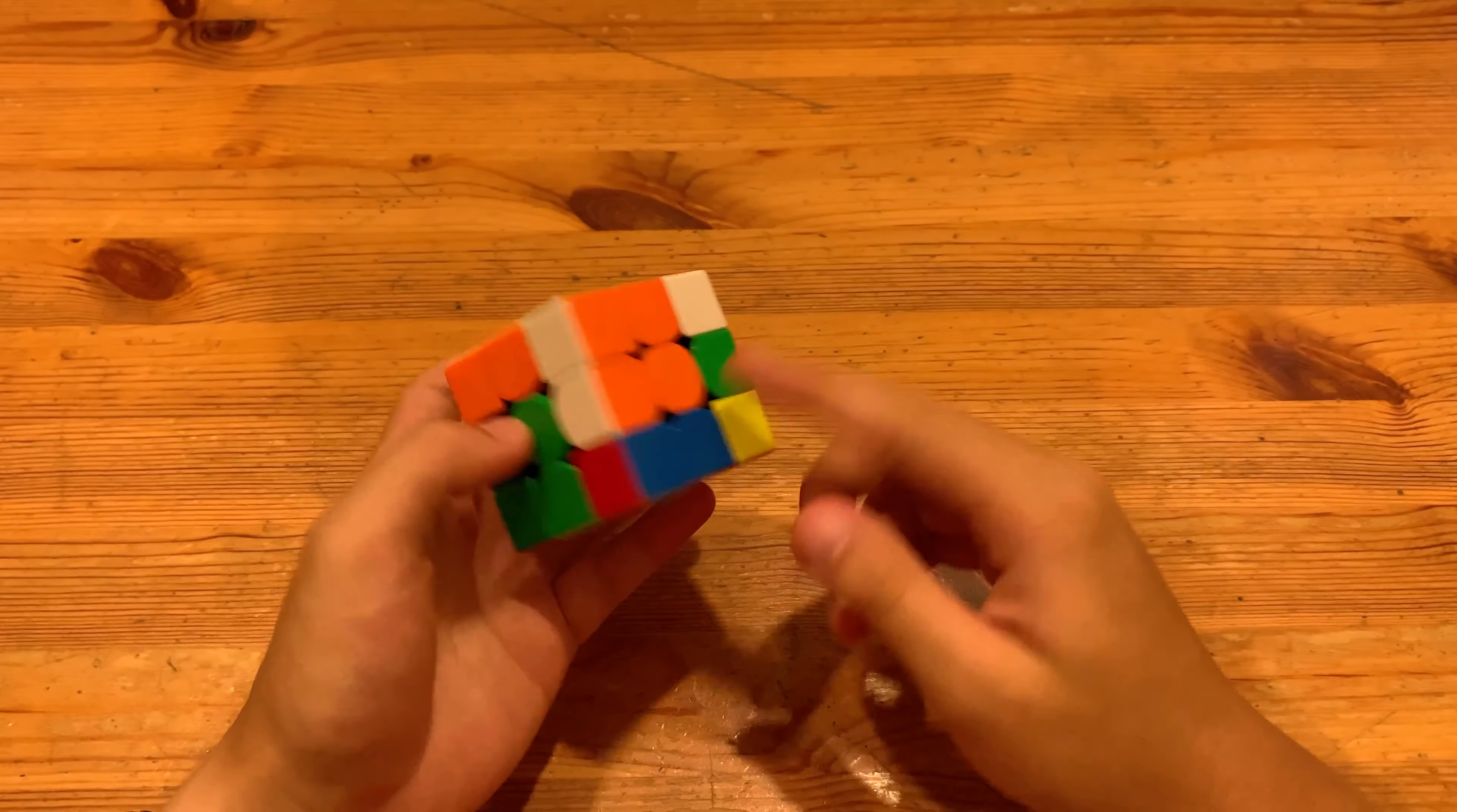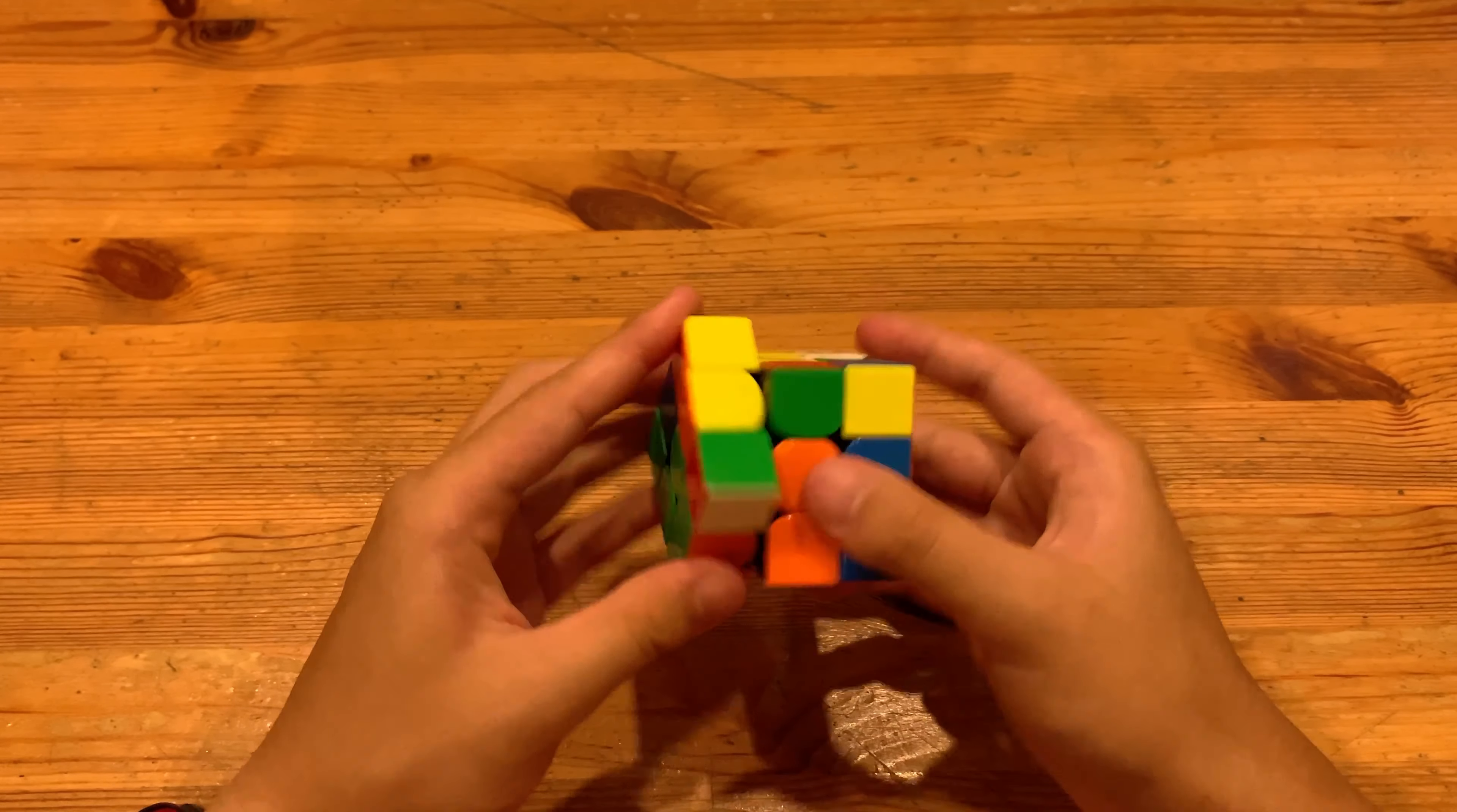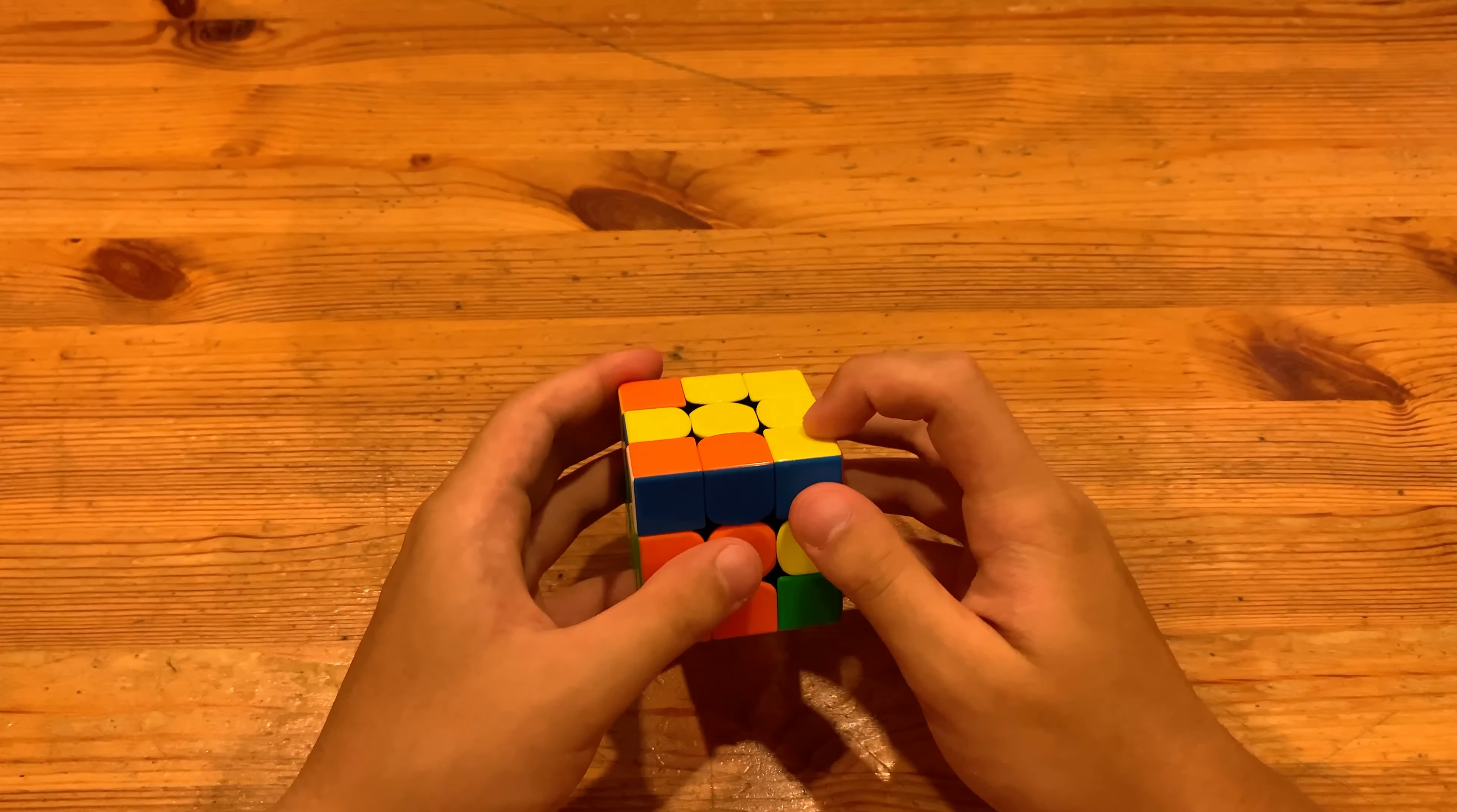And what he did was just a rotation into solving the other pair, so pair it up and then insert. And next he had this pair, so do a sledge, and here he had a very easy winter variation.